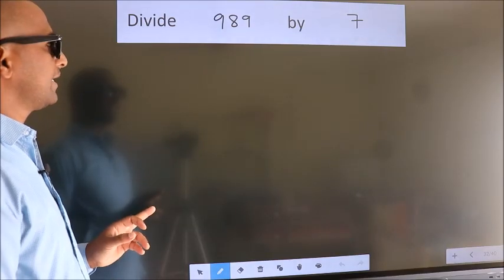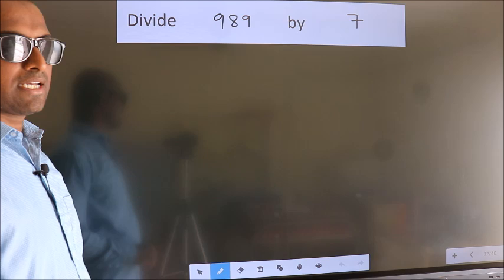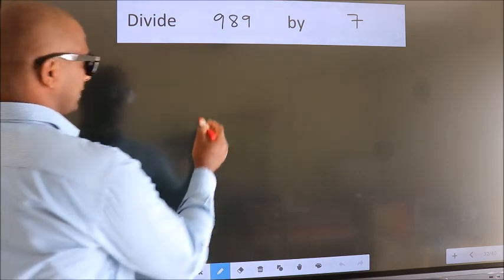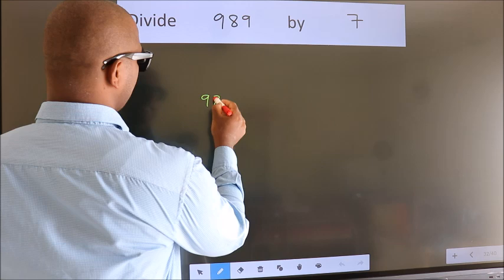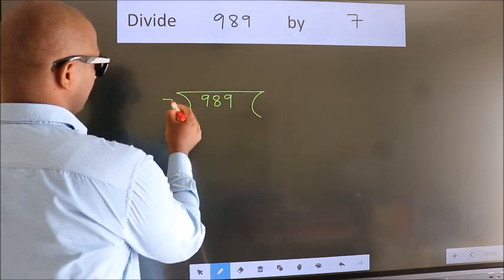Divide 989 by 7. To do this division, we should frame it in this way. 989 here, 7 here.